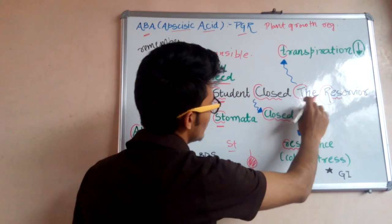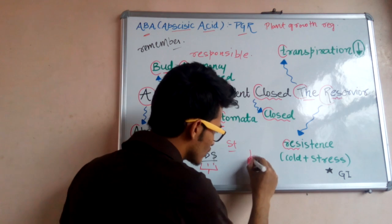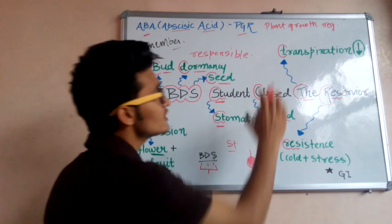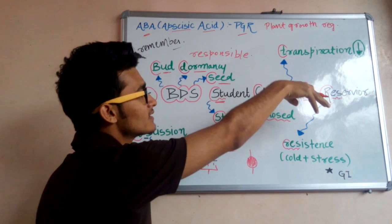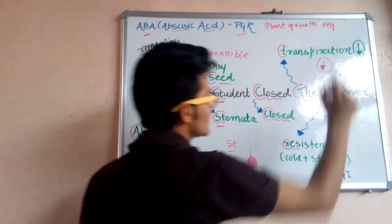In the letter T means transpiration. As the stomata is closed, therefore the rate of transpiration is going to be decreased. So the transpiration rate decreased.